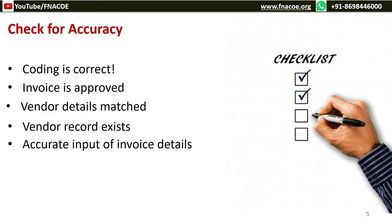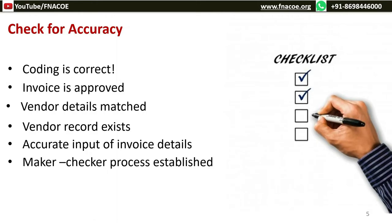Ensure that vendor details in the system are exactly matching with the name on the invoice. It is always advisable to cross-check 2–4 other parameters before punching the invoice, because a name can be similar. You will also need to check the address, bank details, and other tax details, as there could be many vendors with the same name. Especially in non-PO invoices, payment may go to the wrong vendor since the three-way matching control is missing. Accurate input of invoice details is critical, and that can be ensured by adding a maker-checker process.